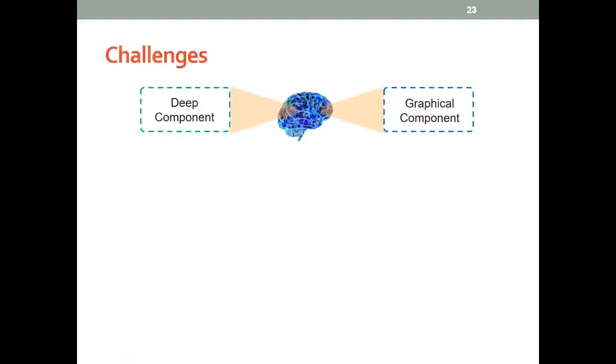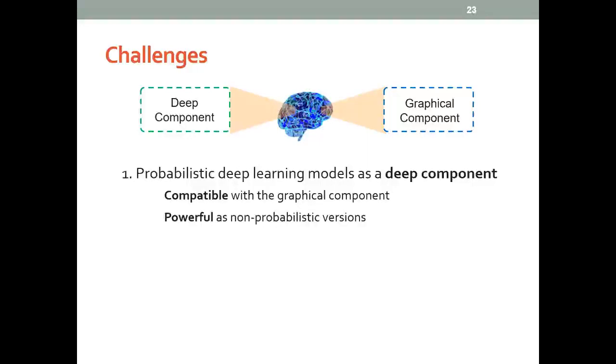By doing this, we have at least two challenges. The first challenge is that we want the deep component to be some probabilistic deep learning models that are compatible with the graphical components and powerful, or at least as powerful as its non-probabilistic counterparts.